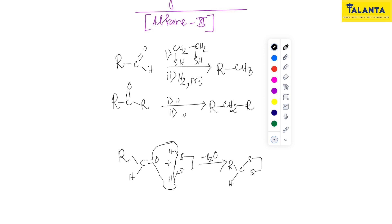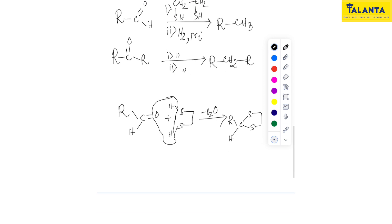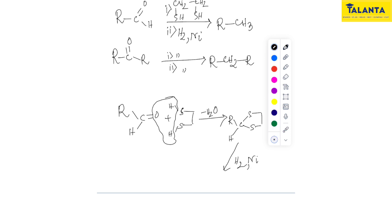The carbonyl compound reacts with H₂S to form a cyclic thioacetal, which is then treated with hydrogen and nickel catalyst. In the C-S bond, carbon uses 2p and sulfur uses 3p orbitals — their overlap is 2p-3p, which is very weak.